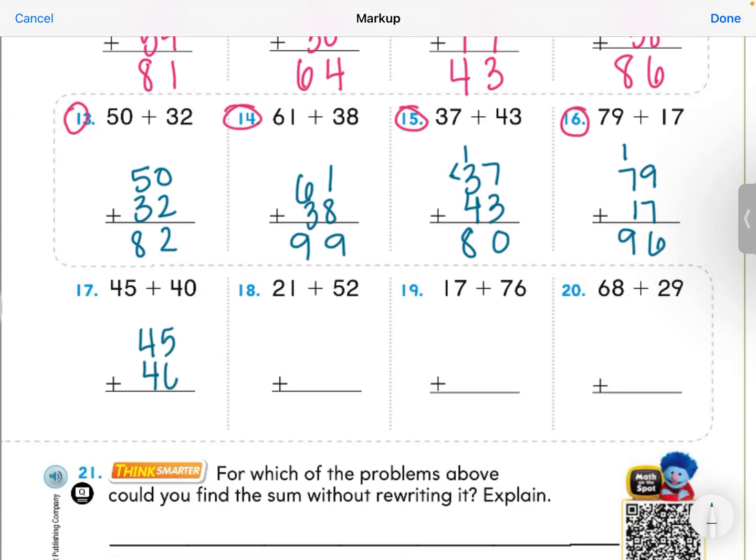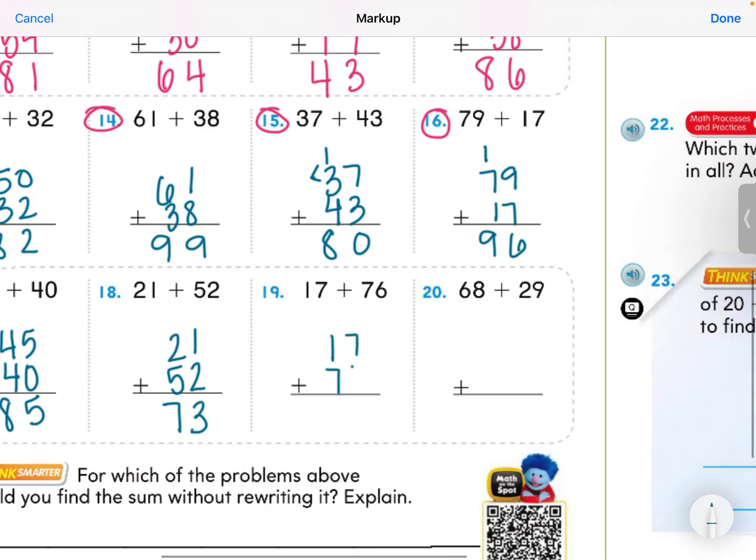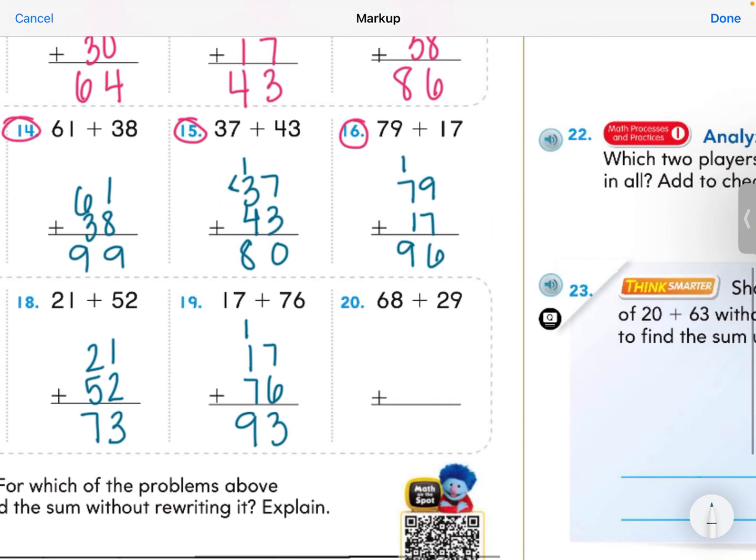Number 17, 45 plus 40. Please pay careful attention to how you are lining your numbers up. Are your ones with your ones and are your tens with your tens? We can't get sloppy, friends. I'm going to add up my ones. 5 plus 0 is 5. 4 tens plus 4 tens is 8 tens. 21 plus 52. 1 plus 2, 3. 2 tens plus 5 tens is 7 tens. 17 plus 76. I'm still lining them up each and every time because I need to have neat work so I don't get the wrong answer. 7 plus 6, 13. 7 tens and 2 more tens, 93. 68 plus 29. 8 plus 9 is 17. 6 plus 1 more is 7. 7 and 2 more, 9. 97.